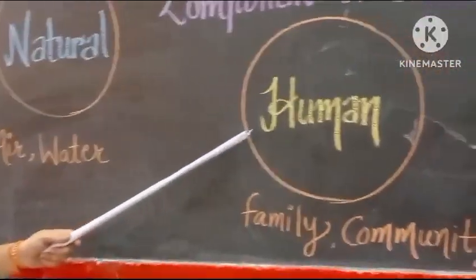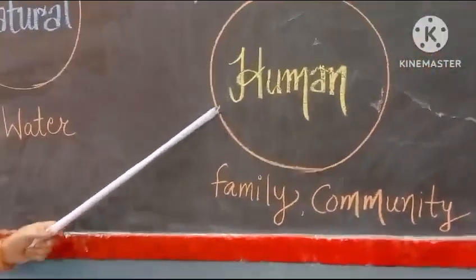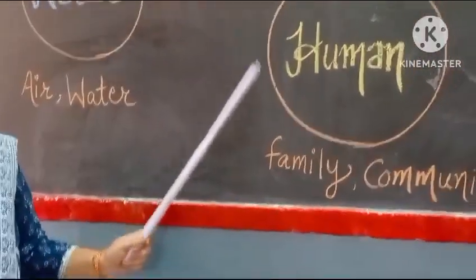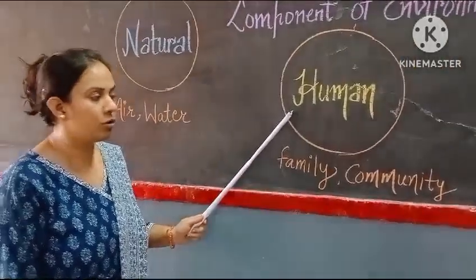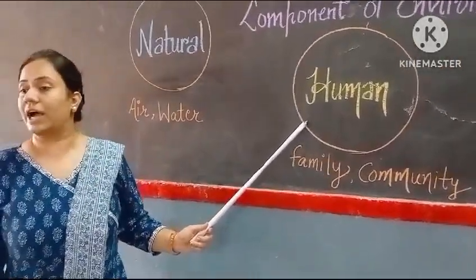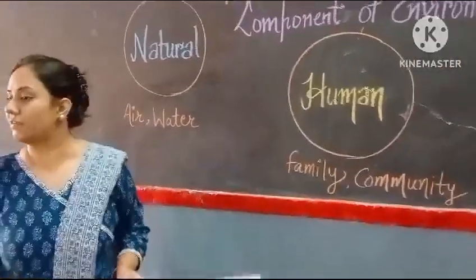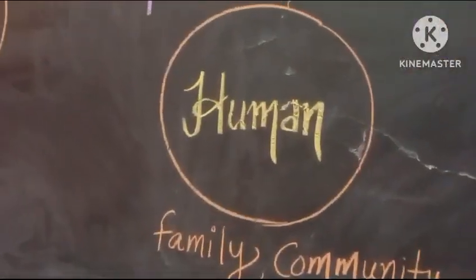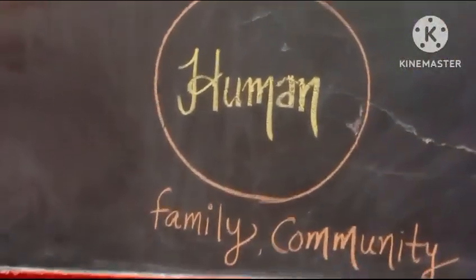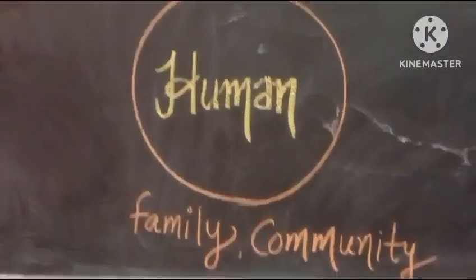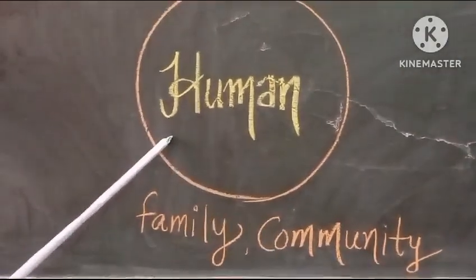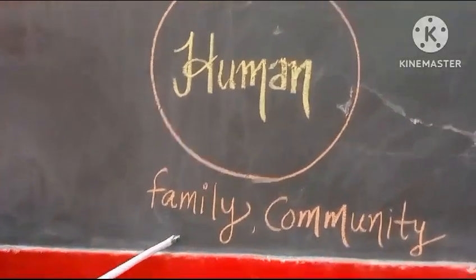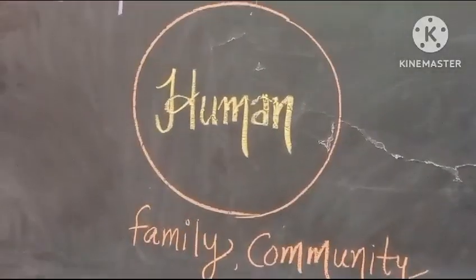Human environment — what happens in this environment? We have family, community, schools. This is an environment where we interact with each other. What is the method of communicating with each other? That is the human environment. For example, family, community.